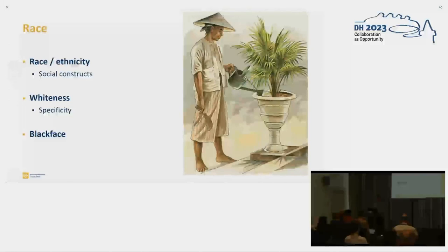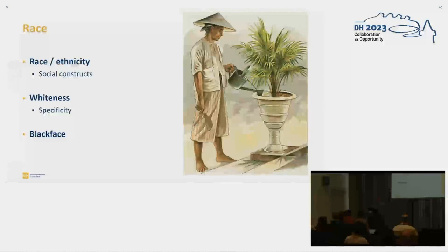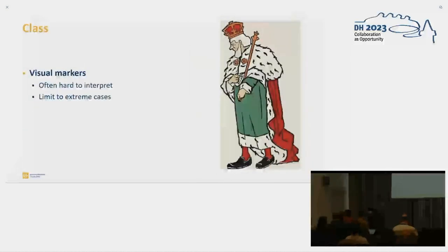But then if you're annotating this, you come across things such as blackface, for example, where white characters are dressing up as non-white characters. How do you label this? Is it saying something about representation of whiteness or non-whiteness? All of those things — how you put that in your database — also influence your results at the end.